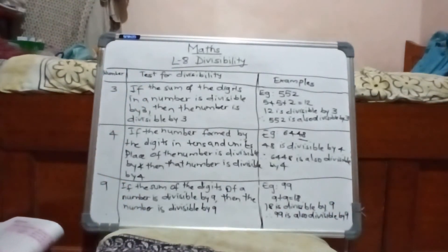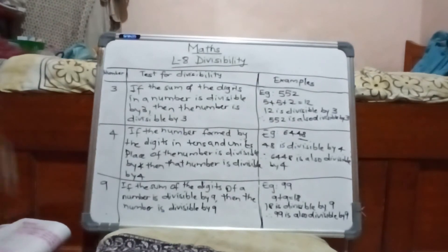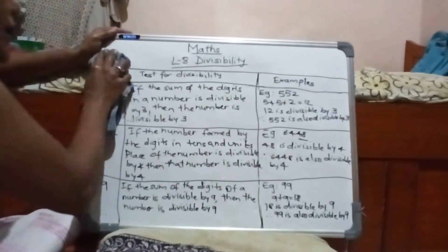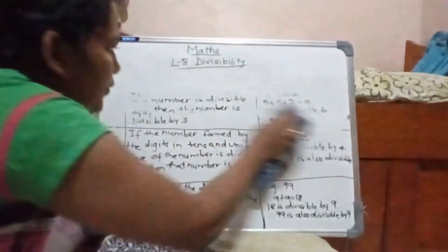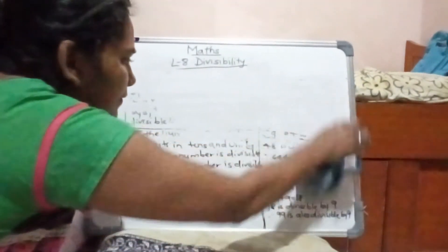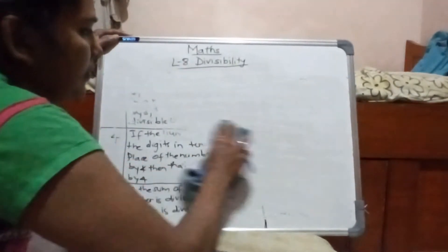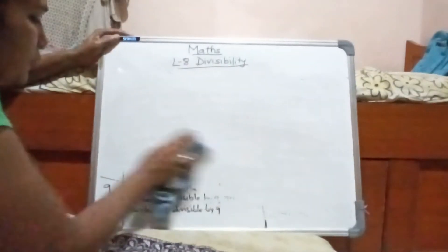I hope all the tests for divisibility for the numbers 2, 5, 10, 3, 4, and 9 are understood by you all. Now we will take an example to conclude this chapter. I will just rub the board and then show you.